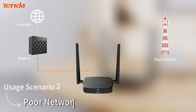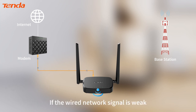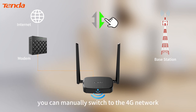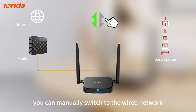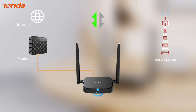Usage Scenario 2 – Poor Network Quality. If the wired network signal is weak, you can manually switch to the 4G network. If the 4G network signal is weak, you can manually switch to the wired network.